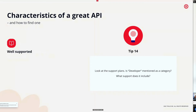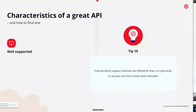An API needs to be well supported. Look at the support plans — is 'developer' mentioned as a category, and if so, what does it include? Find out which support channels are offered for free: is it just email, or can you use chat or even voice on a free plan?